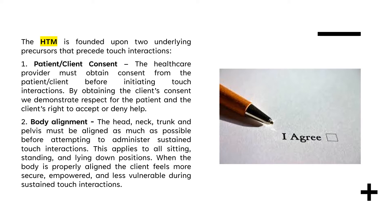We also discussed how the HTM is founded upon two underlying precursors that precede touch interactions. The first is to obtain the patient or client's consent. The healthcare provider must obtain consent from the client before initiating touch interactions, demonstrating respect for the client's right to accept or deny help. The second is body alignment — the head, neck, trunk, and pelvis must be aligned as much as possible before attempting sustained touch interactions, in all sitting, standing, and lying down positions. When the body is properly aligned, the patient feels more secure, empowered, and less vulnerable.